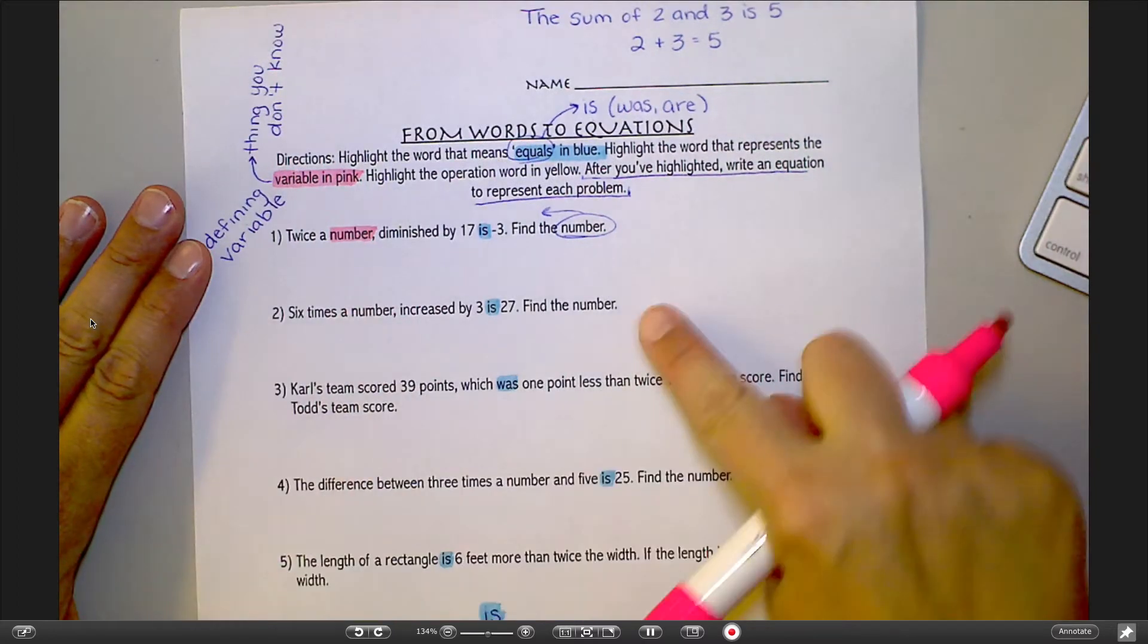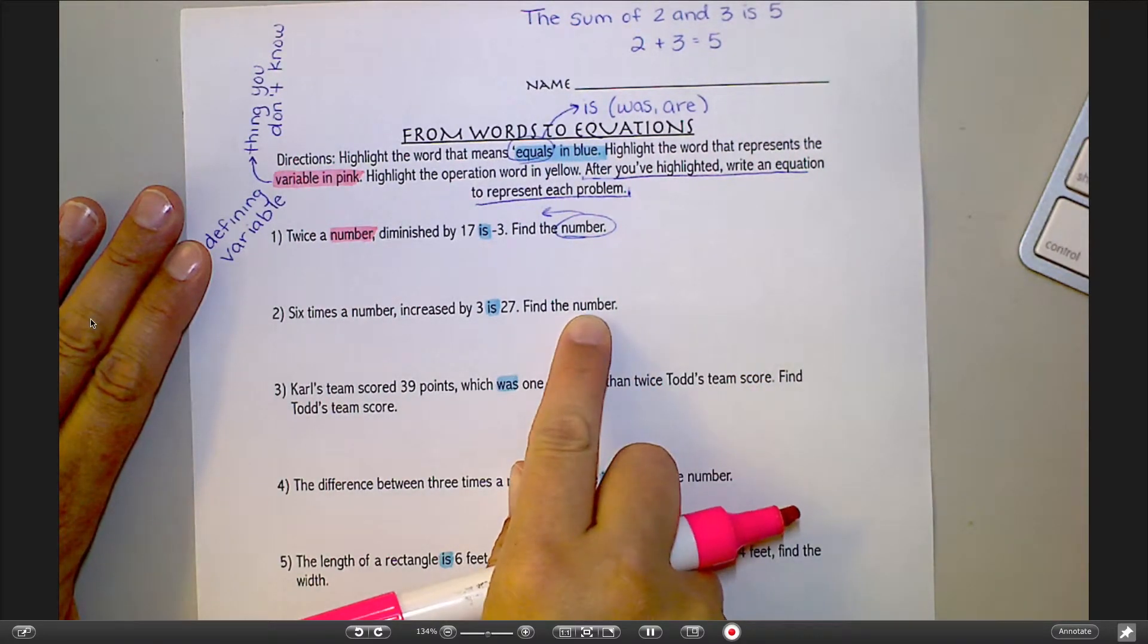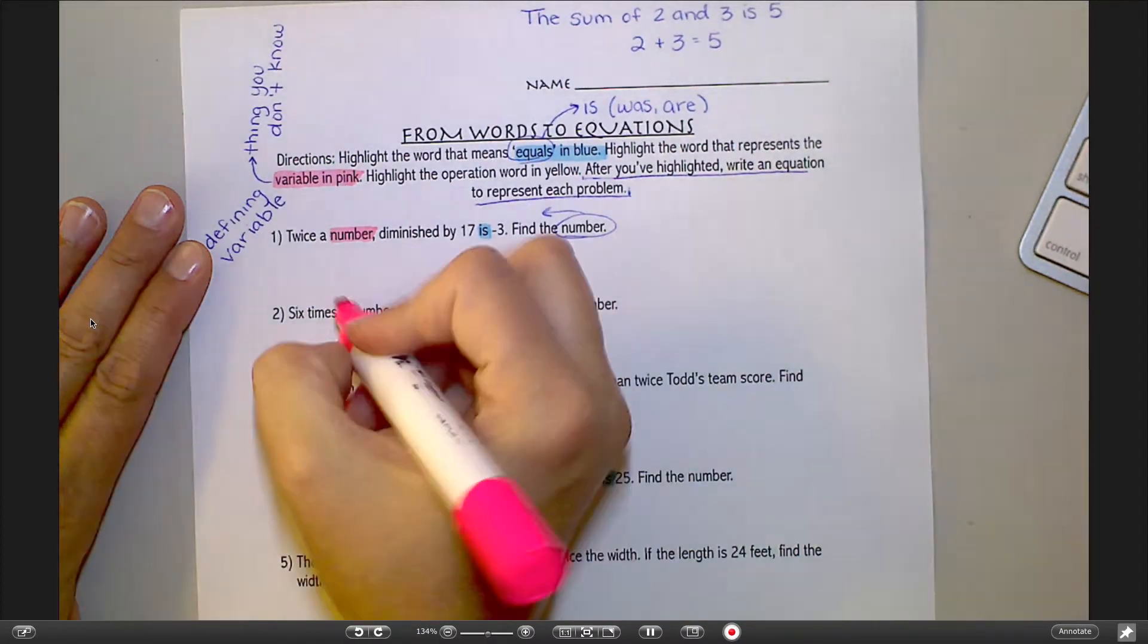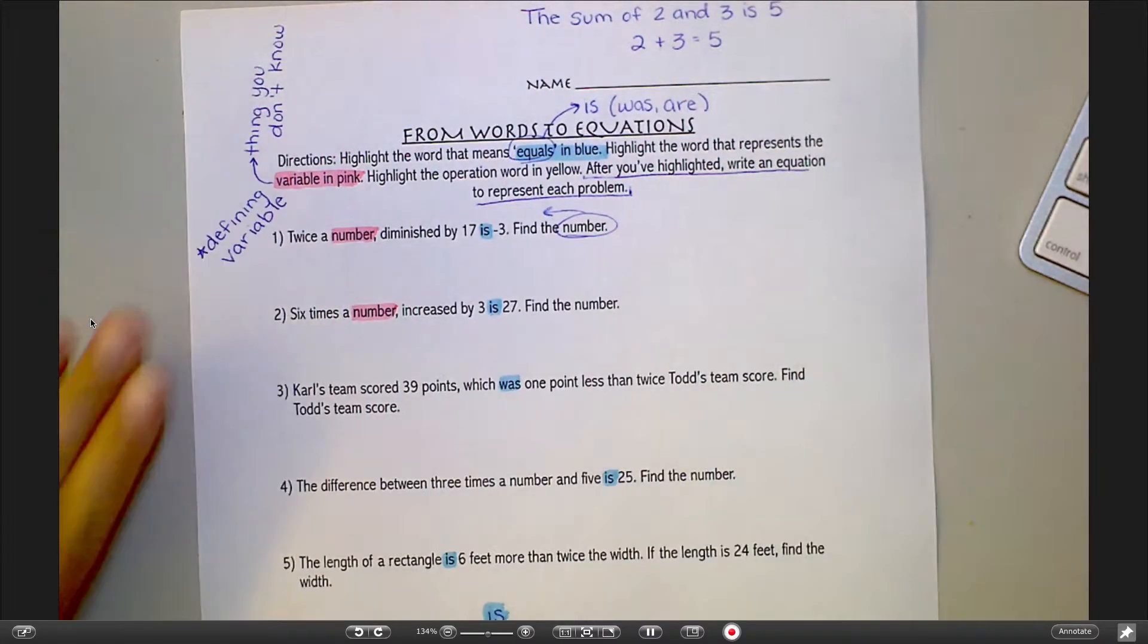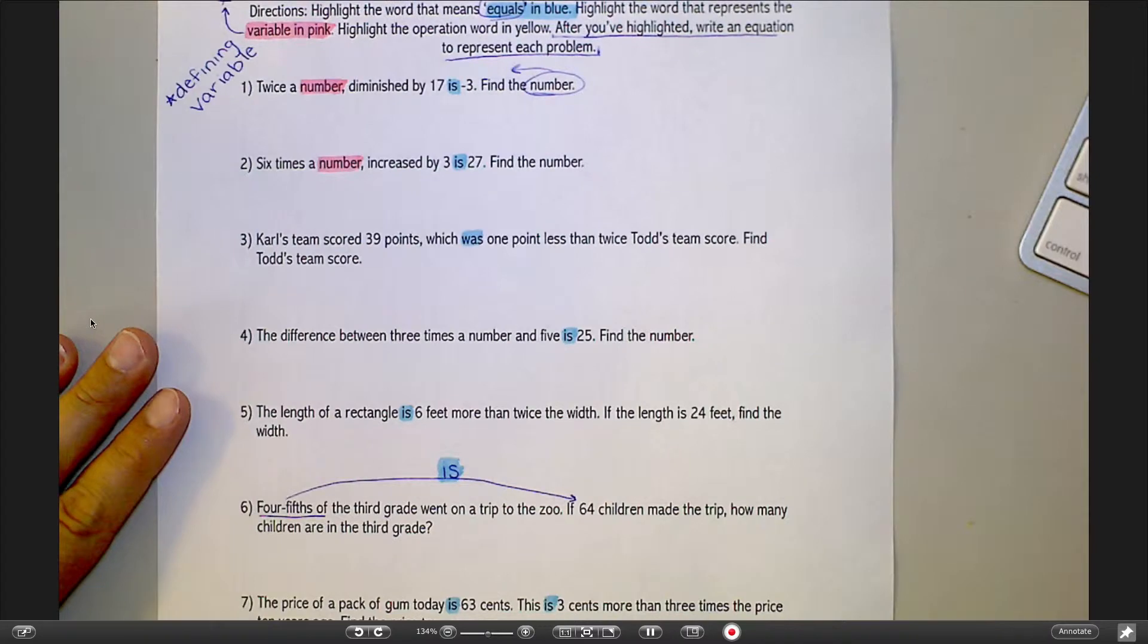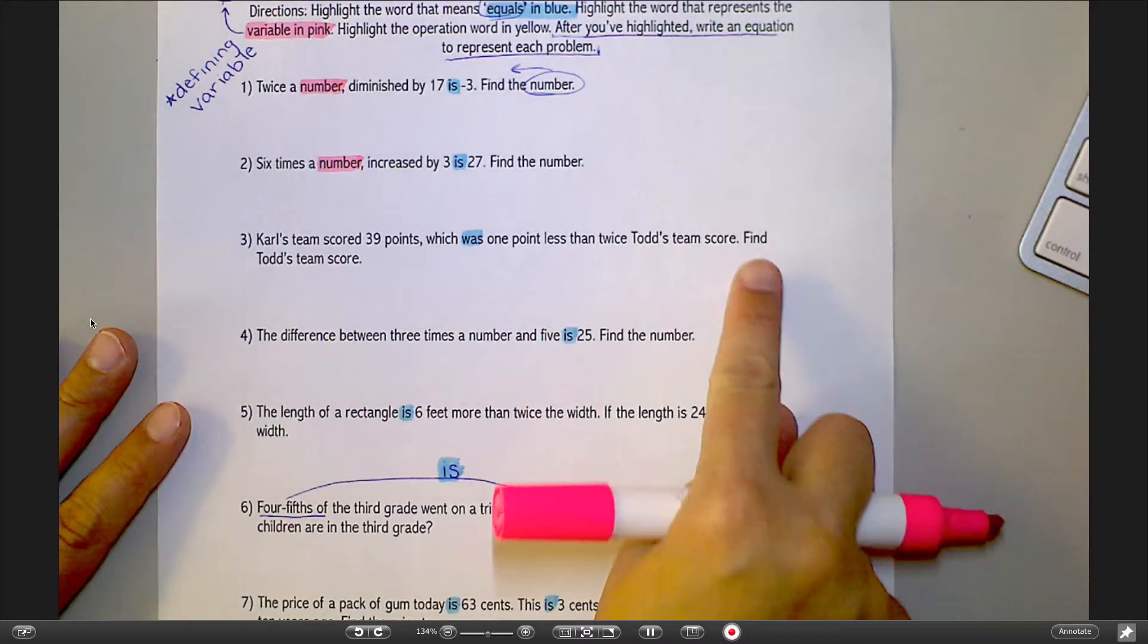Number 2, skip to the end of the problem. Find the number. So the number is my mystery thing. And there it is. 6 times a number. The number is what I don't know. Number 3, skip to the end of the problem. And this is an important thing when you're doing word problems, is I always encourage students to jump to the end of the problem. What is it I'm trying to find?